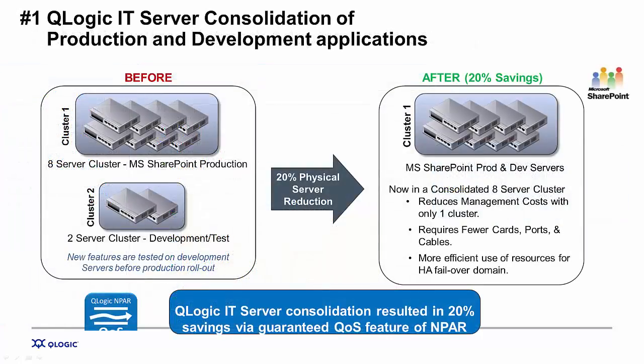Let's look at the power of N-PAR in a few different case studies. I'll start by showing you how utilizing N-PAR has saved our IT department here at QLogic thousands of dollars. In this example, QLogic IT used N-PAR to separate the SharePoint test environment traffic from the production environment. Test and dev environments can usually be quite noisy and can impact production environments when they are on shared resources. By design, QLogic IT used a dedicated cluster for test and dev. By implementing N-PAR in the production environment, we were able to dedicate networks for the test and dev environment and combine those resources into one single eight-server cluster. Not only does this reduce the amount of management, it reduces the amount of hardware and greatly increases the flexibility and high availability of our overall IT environment.